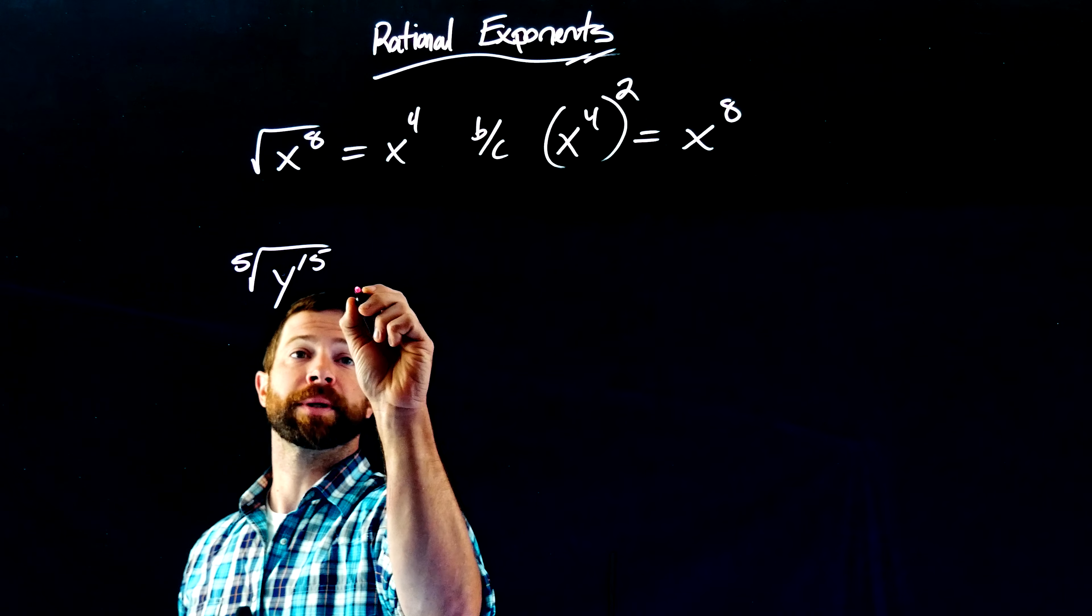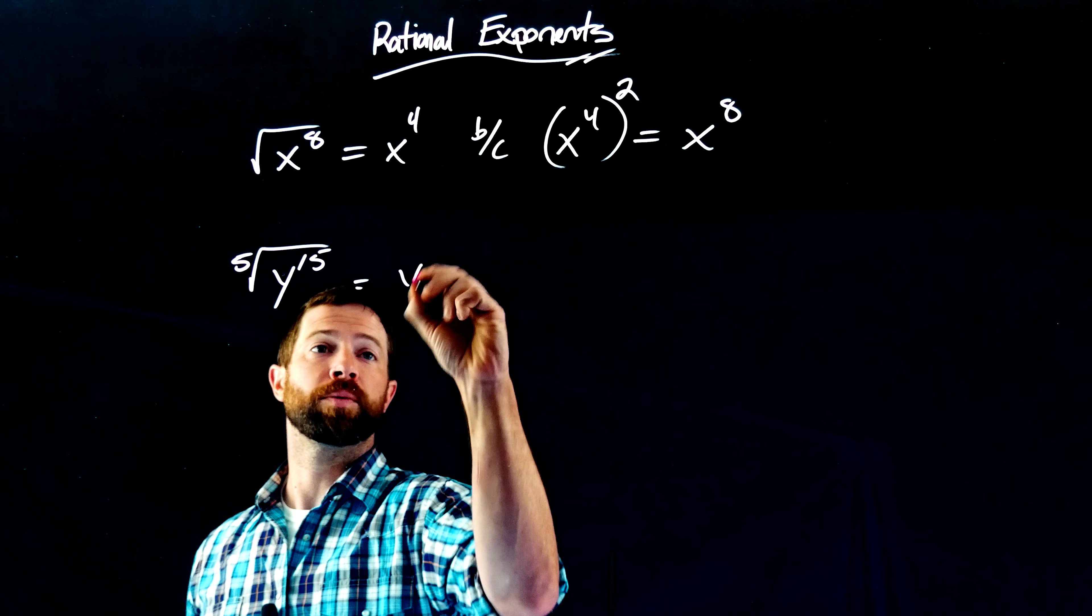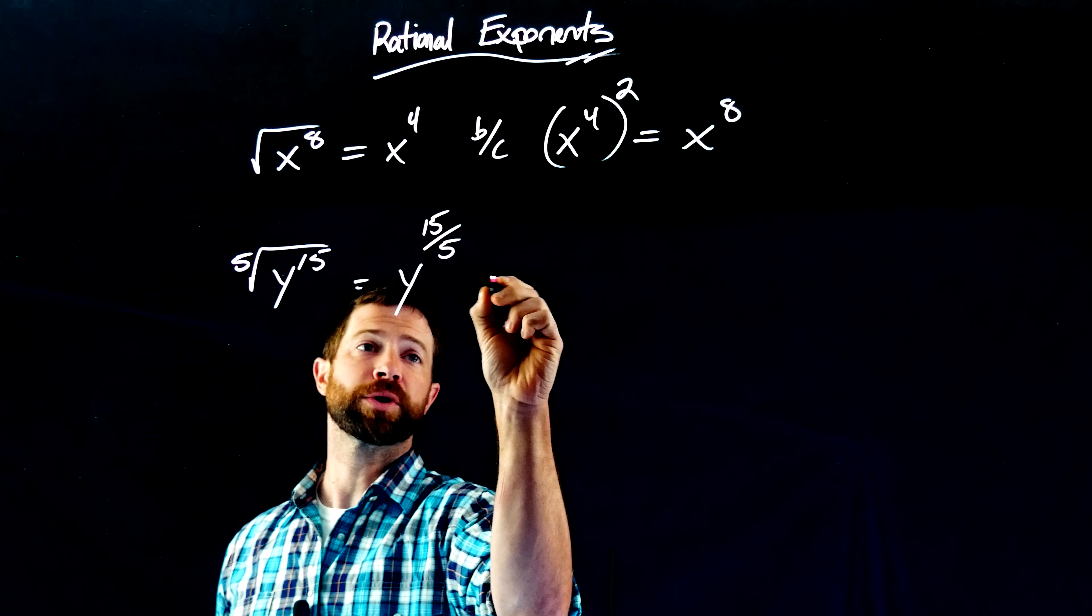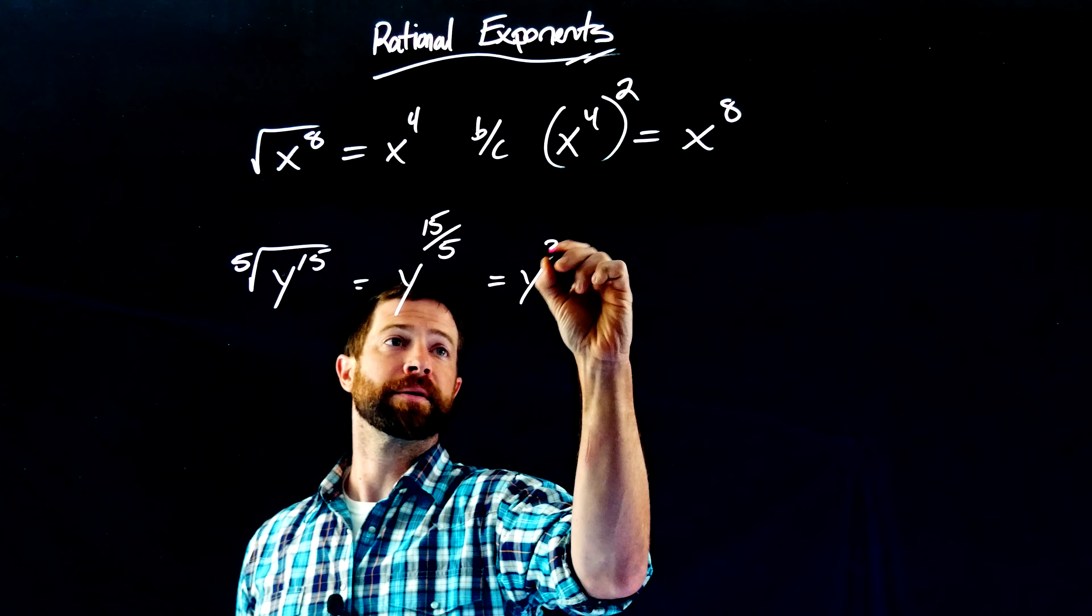I'm going to write it out this time, just so we can talk a little bit more about this. This would be y to the 15 divided by 5, which would end up giving me y to the third.